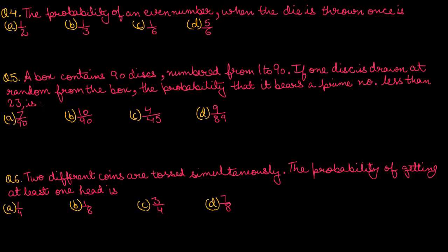Question number 4: What is the probability of getting an even number when a die is thrown once? When we throw one die, our sample space is 1, 2, 3, 4, 5, 6. The even numbers are 2, 4, and 6. So the required probability is 3 upon 6, which after simplification is 1 upon 2. Option number A is correct.